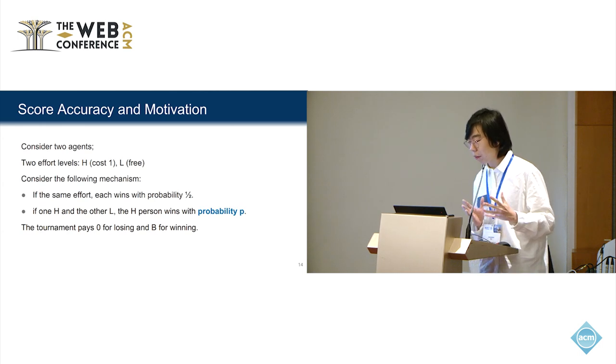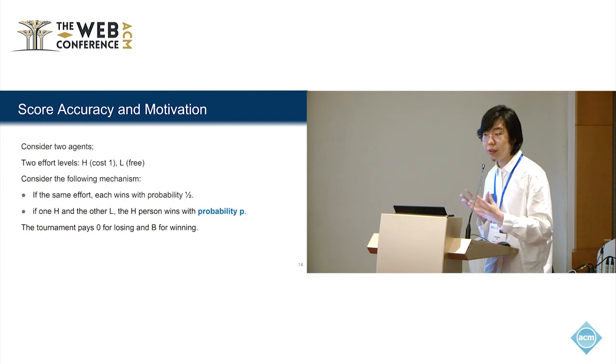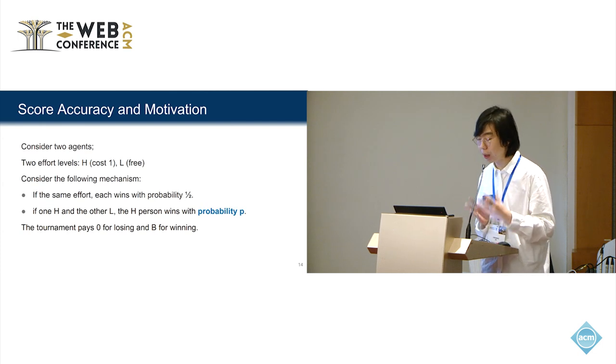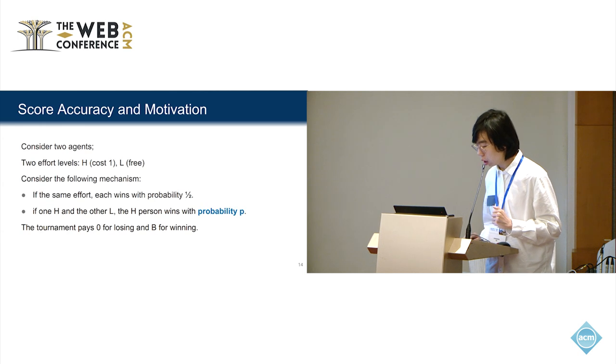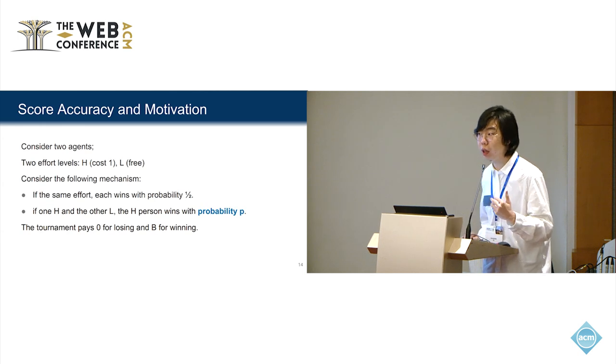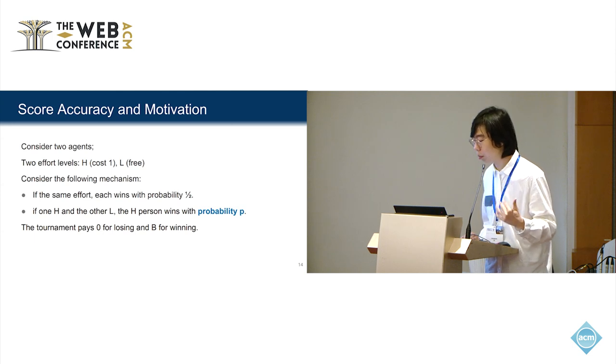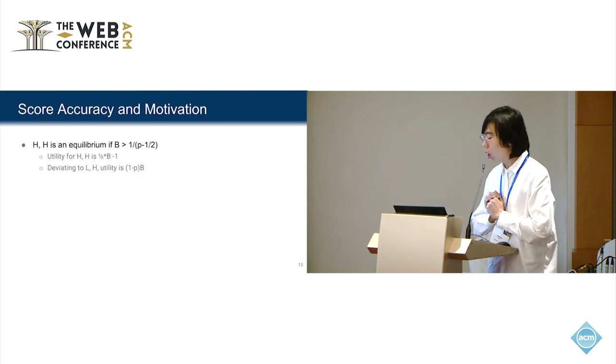After that, we use a tournament, pay zero for the losing people, and pay b for the winning agent. Note that this probability p depends on how accurate the score is. If we get a more accurate score, we get a higher p.